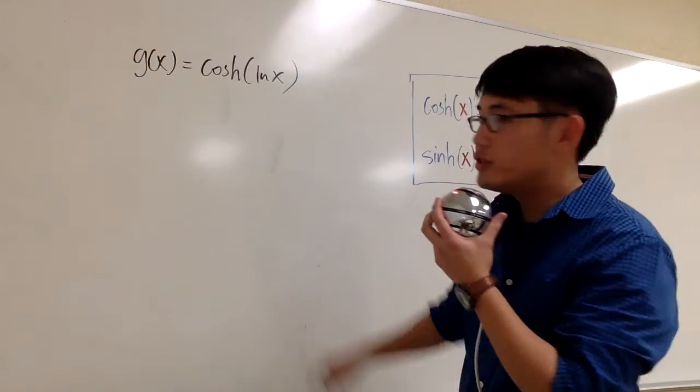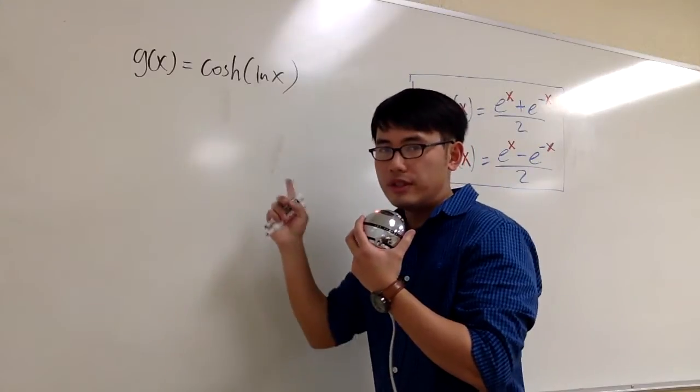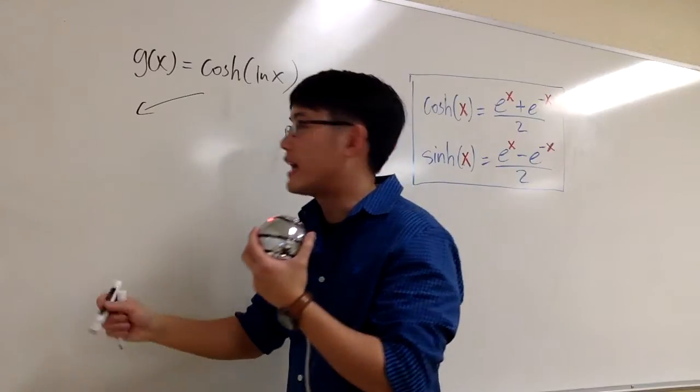Let's talk about how we can differentiate cosh of ln x. I'm going to show you there's two ways for this question. The first way is, I'm just going to look at this expression and take the derivative of that.